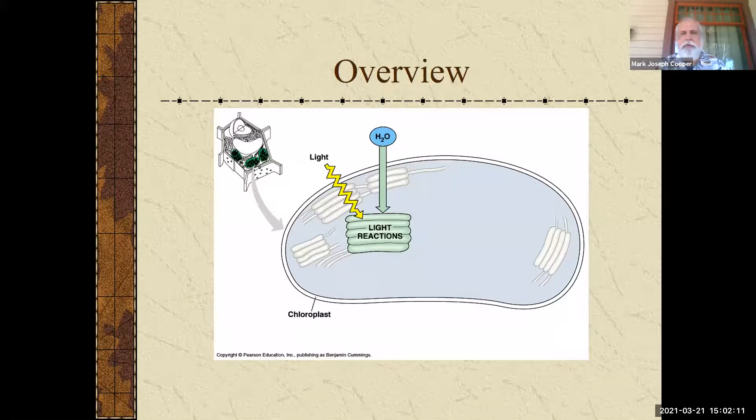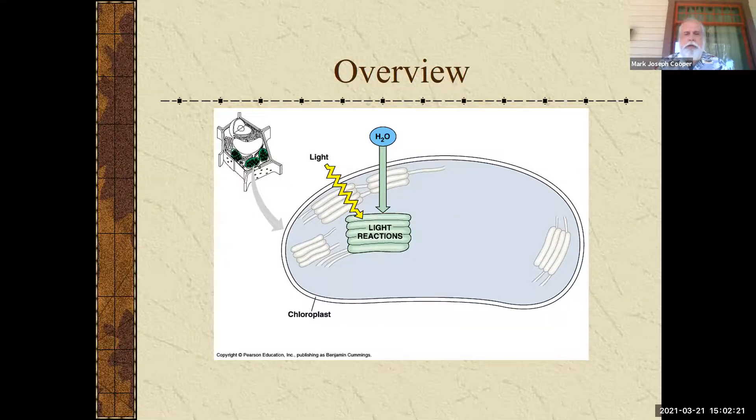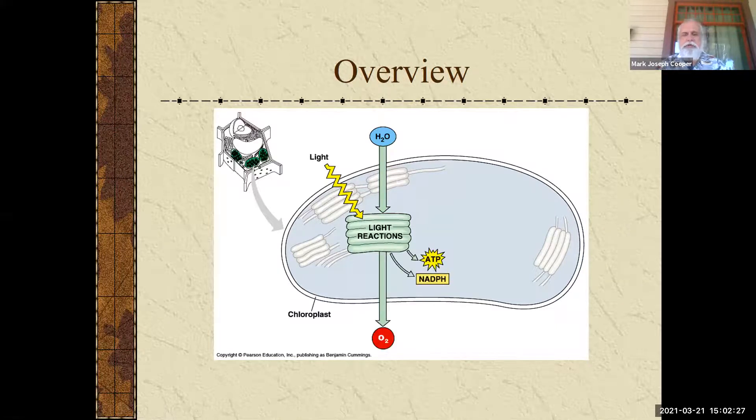All right. So here we got light. We got water coming in into a chloroplast. You can see it's hitting a thylakoid or a stack of thylakoids. This would be grana. And we're using water and we will discuss why that is necessary. And then what happens is it makes ATP and NADPH and O2.